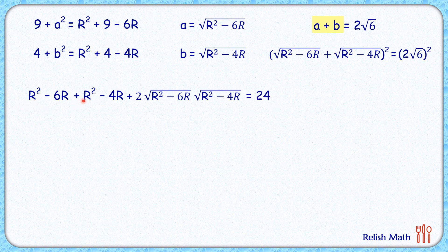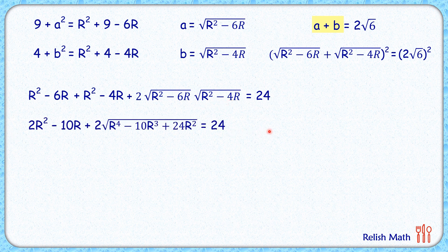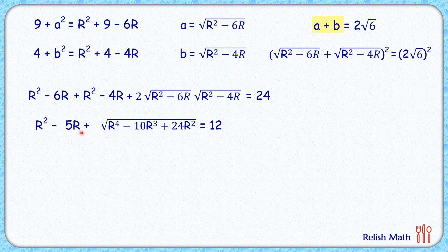Simplifying further: r² + r² gives 2r², minus 10r. The square root term involves multiplying both terms inside and simplifying. We can divide the full equation by 2 to simplify it further. To get rid of the square root, we take everything other than the square root term to the RHS.